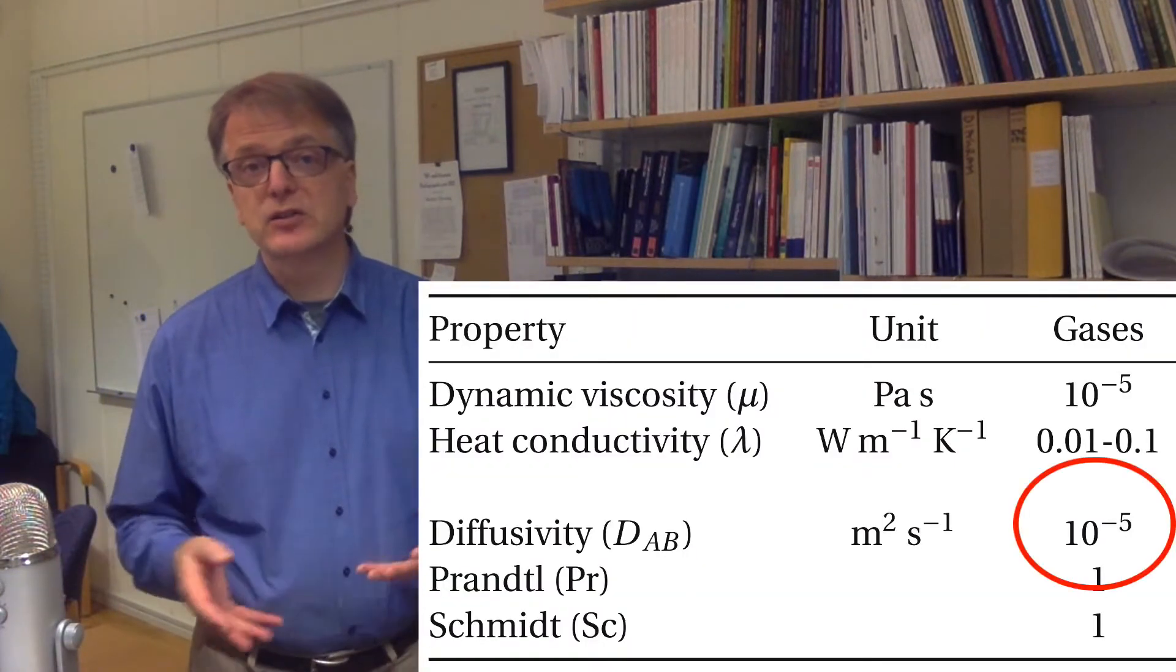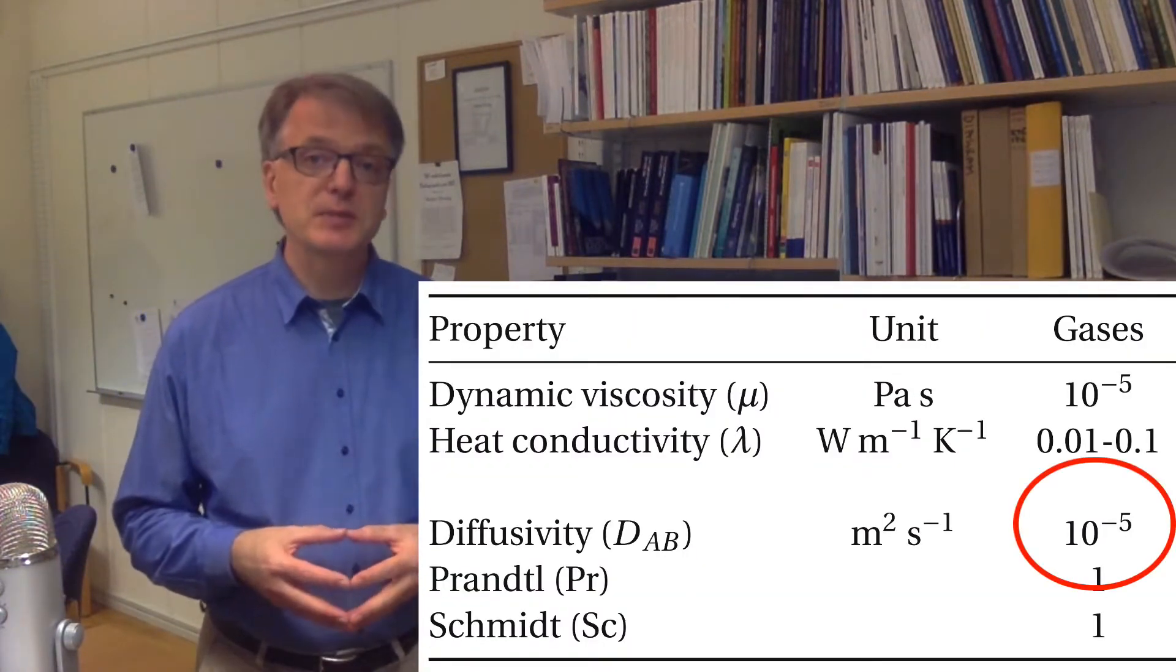So far we have estimated mass diffusivity in gases, and an approximate order of magnitude for such diffusivities is 10 to the power of minus 5 square meters per second.